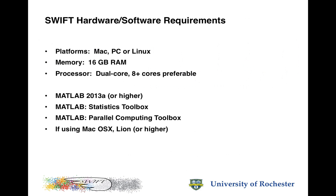Now the requirements for running Swift. For hardware, we can run Swift on at least three different platforms: Mac, PC, or Linux. We recommend at least 16 gigabytes of RAM, although more can be a benefit. For a processor, dual core is probably minimal; eight or more cores are preferable because Swift does take full advantage of parallel processing.